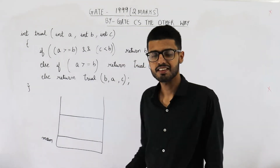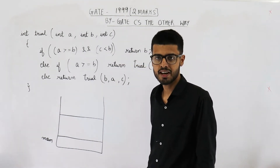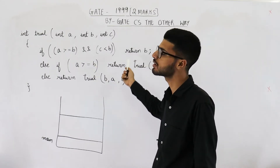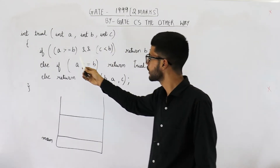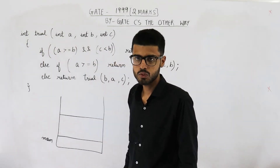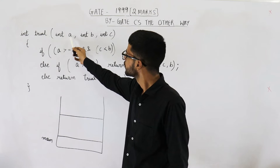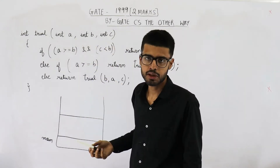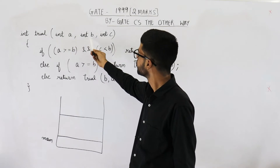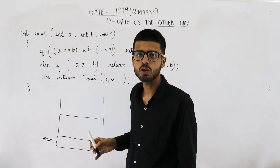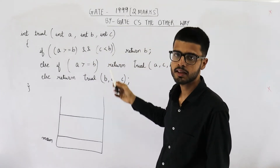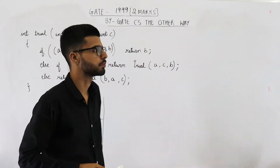Hello dear students, welcome back. This 2-marks question is from the GATE 1999 exam. They're asking what is this function named 'trial' doing? Have a look. You can see trial is going to return an integer type value and it needs three integer values as parameters.